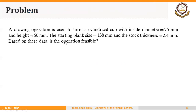Let's solve a simple example to illustrate the use of these parameters. A drawing operation is to be performed for a cylindrical cup with an inside diameter of 75 mm and a height of 50 mm. The starting blank size is 138 mm and the stock thickness is 2.4 mm. Based on this data, is the operation feasible or not?